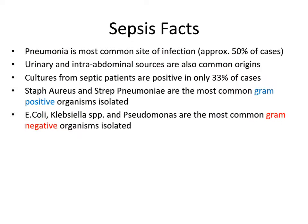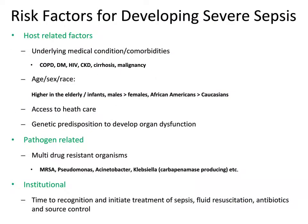Blood cultures, surprisingly, are only positive in about 33% of cases. Staph aureus and strep pneumoniae are the most common gram-positive organisms isolated, while E. coli, Klebsiella species, and Pseudomonas are the most common gram-negative organisms identified. Let's review the risk factors for developing severe sepsis. Host-related factors include patients' comorbid conditions, with COPD, diabetes, HIV, cirrhosis, and malignancy being high-risk factors.